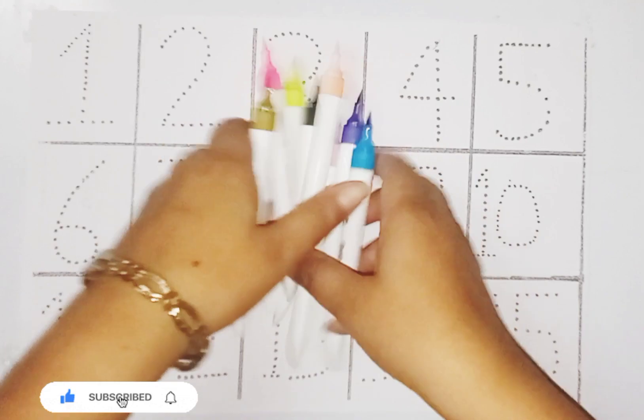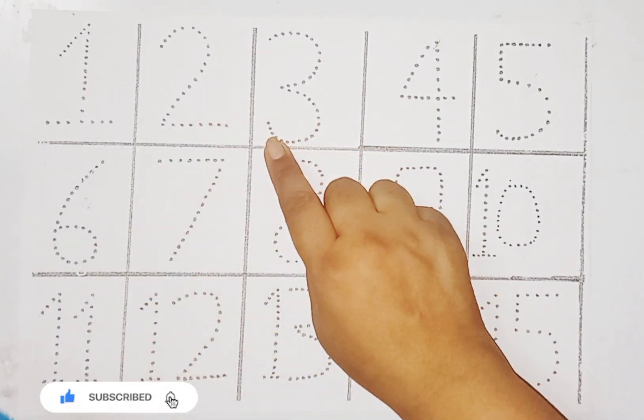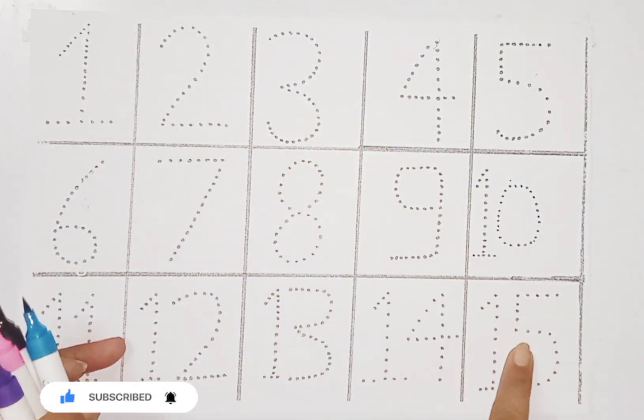These are colors. Now we learn 1 to 15 counting.